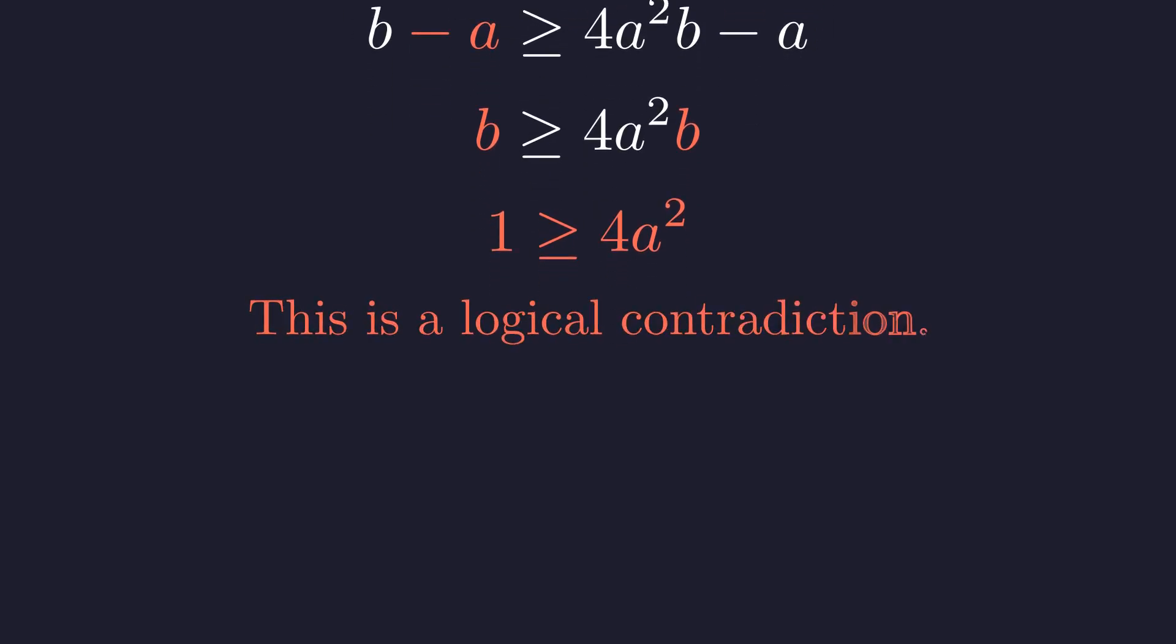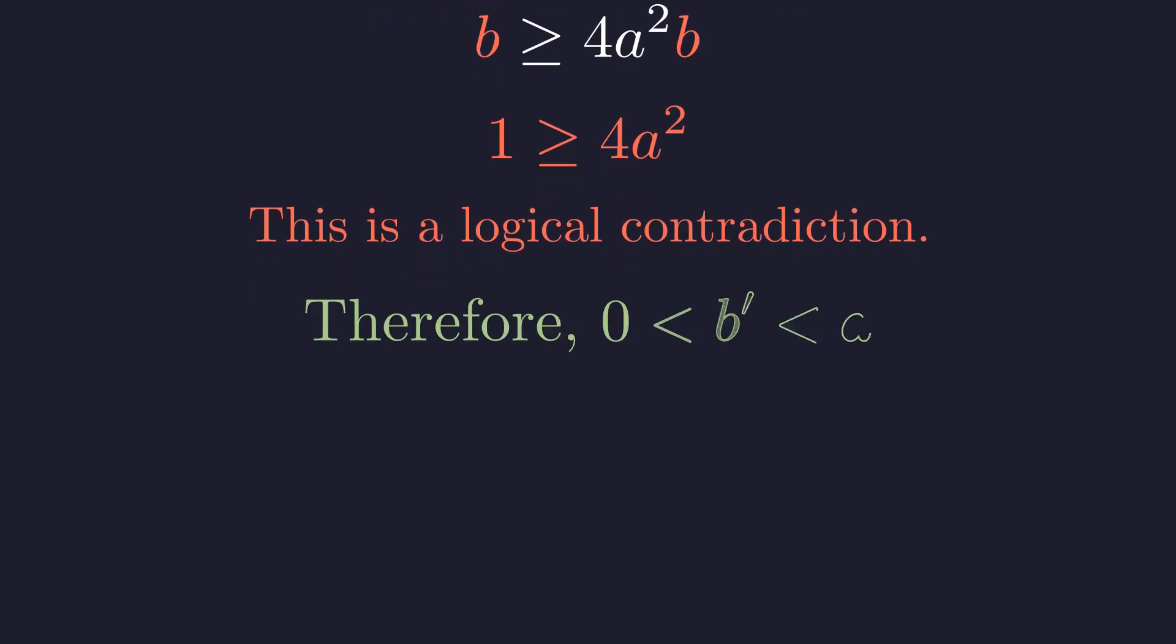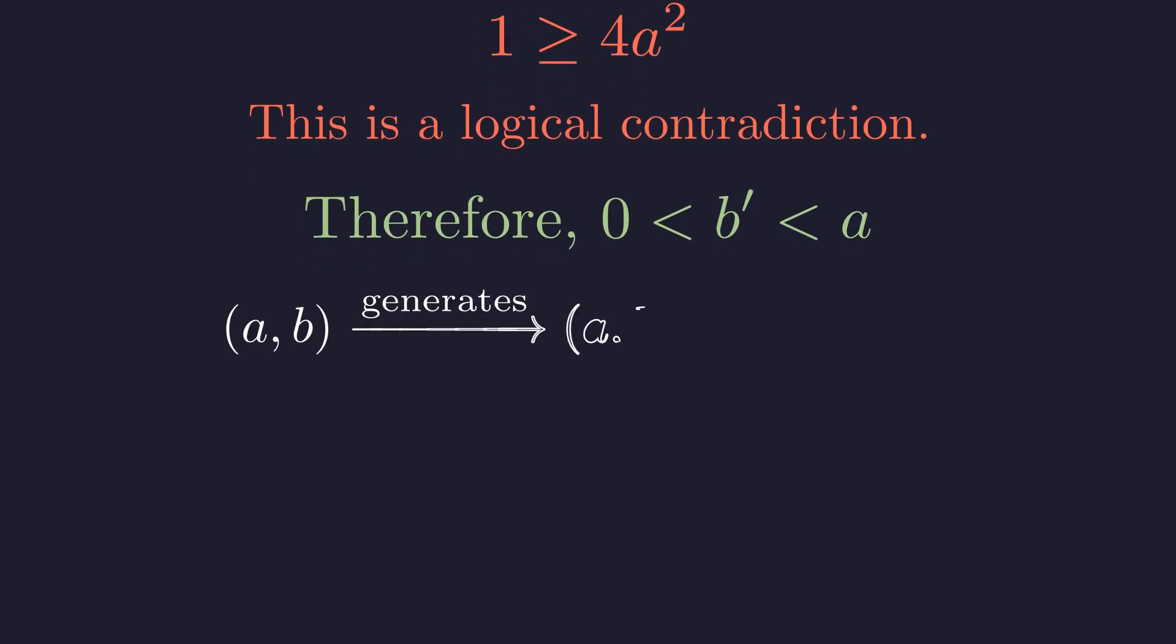Our initial assumption that B prime is greater than or equal to A has led to a logical contradiction. Therefore, the opposite must be true. The new solution, B prime, must be a positive integer strictly smaller than A. So, by assuming a solution AB exists where A is not equal to B, we have constructed a new integer solution AB prime with a strictly smaller positive component. Because B prime is the other root of the same quadratic, this new pair also satisfies the core equation. This process can be repeated.